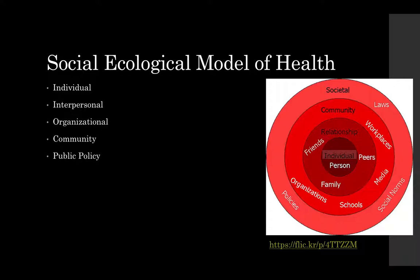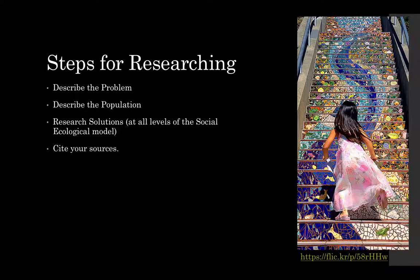In this class you're going to be doing research under the social ecological model of health, and all of the research that you're going to be doing needs to be done with this in mind. The model I have here in the image might not look exactly like what you've talked about in your course, and the bullet points might also be a little bit different, but in general you can map together how library research falls into that and how you can organize it. You're going to have to describe the problem, describe the population you're talking about, and research solutions for the problem at all levels of the social ecological model. You will definitely need to be citing your sources, whether it's on a poster presentation, a blog or discussion post for class, or your infographic.